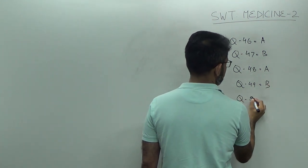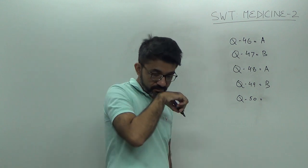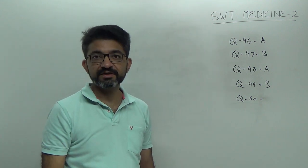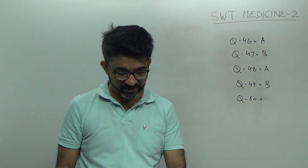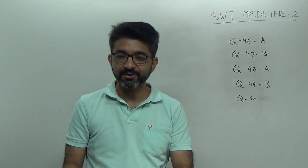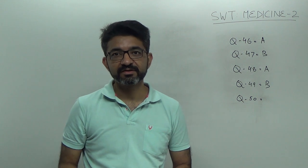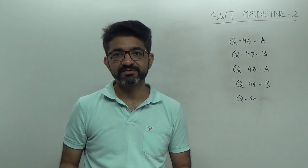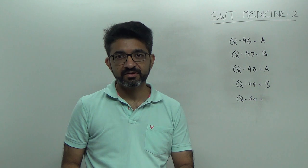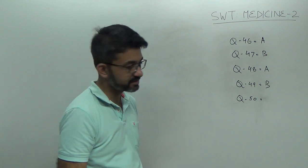Question number 50, Terry's nails are seen in liver failure. It is a classical feature of liver failure. It is ground glass appearance of nails with absence of lunula. It is whitish brittle nails with ground glass appearance and absence of lunula. Answer is C.